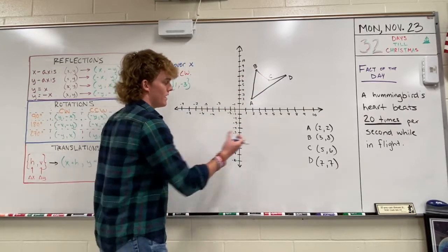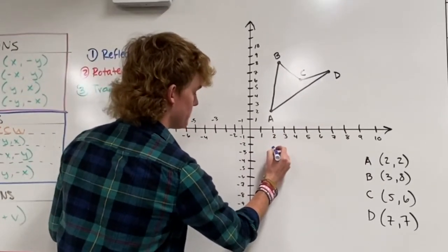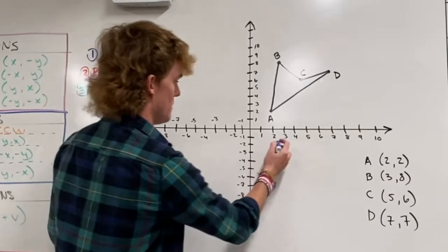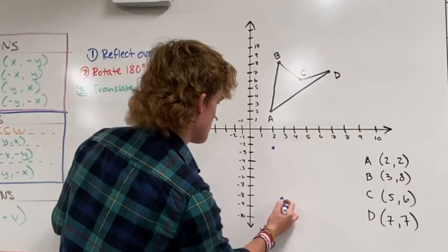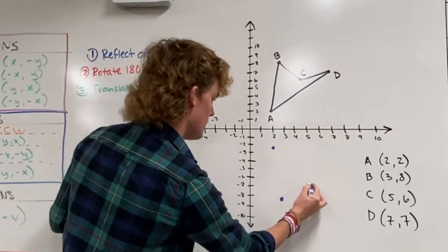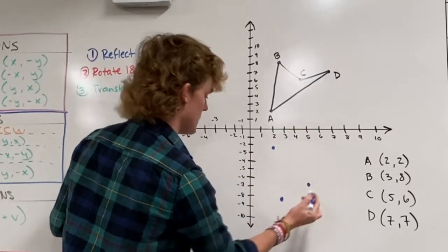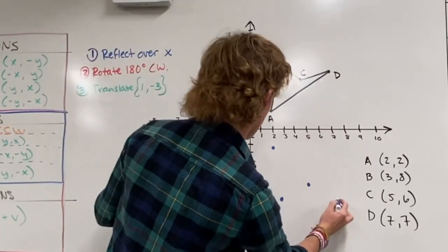So for (2, 2) that will become (2, -2). (3, 8) will become (3, -8). (5, 6) is (5, -6), and (7, 7) will be (7, -7).